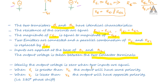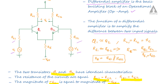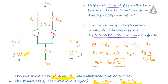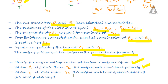Ideally, the output voltage is zero when the two inputs are equal, i.e., V1 equals V2. When V1 is greater than V2, the output voltage will have the same polarity. If V1 is less than V2, the output will be of opposite polarity — a 180 degree phase shift.